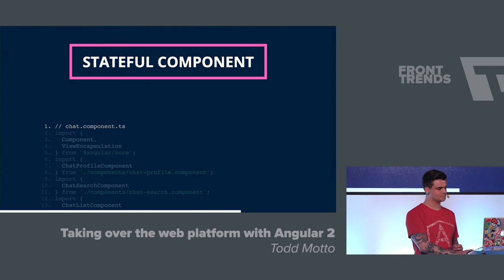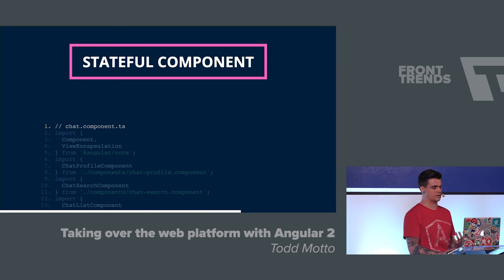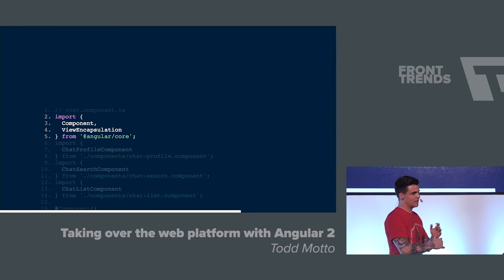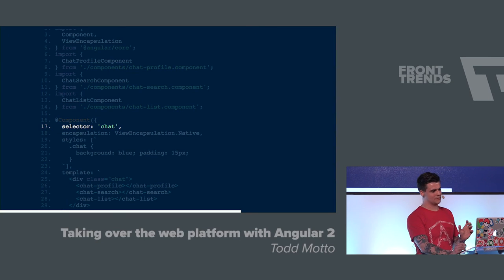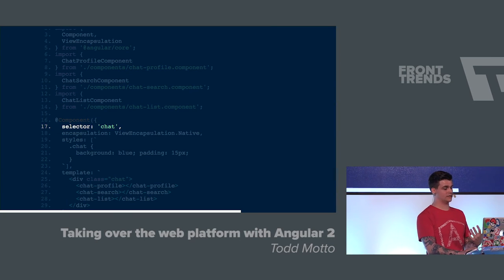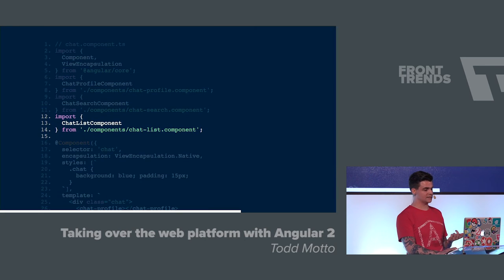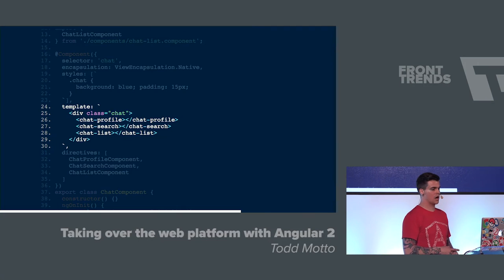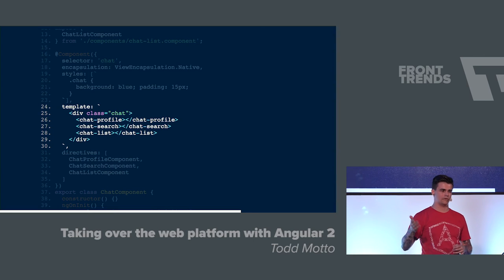The next pieces are about stateful and stateless components. The chat component we've injected into app is going to be a stateful component — it will go and get some state. We import Component and ViewEncapsulation. We create the component decorator on the ES6 class, say we want an element called chat, import chat-profile, chat-search, and chat-list, register them as child components of the chat element, and declare them inside the template. So we've got the root component rendering chat, which then renders chat-profile, chat-search, and chat-list.